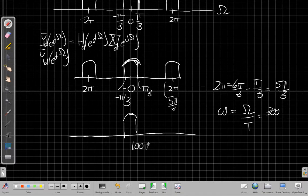When I multiply by 300, the 3's cancel out. I have 100π, which is 2π times 50. And on this side, I have minus 2π times 50.